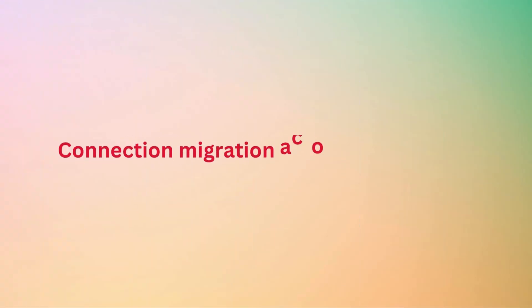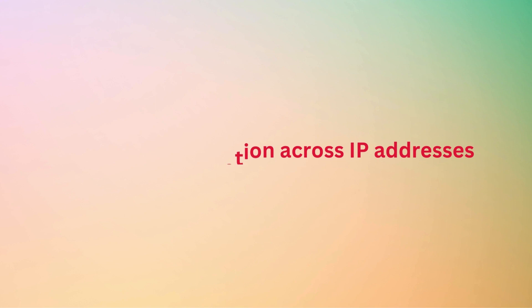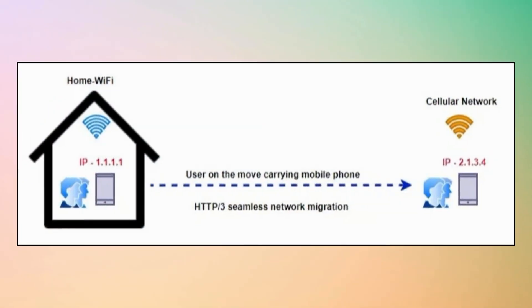Connection Migration Across IP Addresses. With its connection ID concept, QUIC allows seamless connection migration between networks. This means that if the client's IP address changes, the connection is not disrupted. This is especially beneficial for mobile use cases, ensuring seamless transition as the client's network changes.